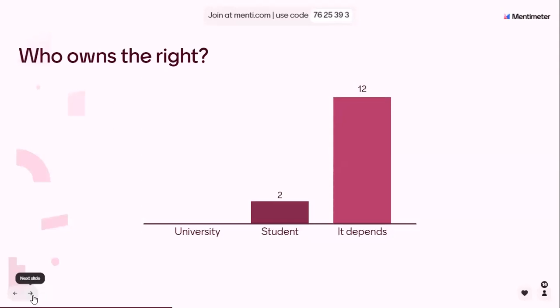In terms of students, most universities recognize as a general principle that students who are not employees of the university should own the copyright in the works they produce based on knowledge received from lectures and teaching. However, there may be some circumstances where ownership has to be shared or assigned to the university or a third party — typically these include sponsored students, or students working on research, thesis, or publications in collaboration with academic staff. Students own the rights, but there is a possibility that it may have been agreed upon differently, and it may vary institution to institution and country to country.